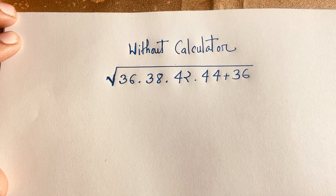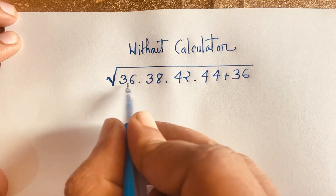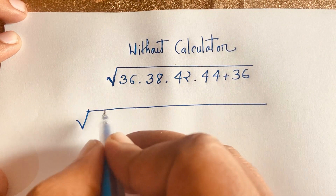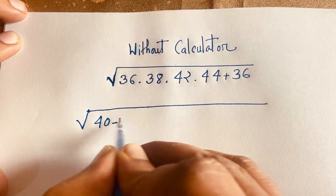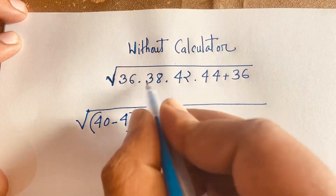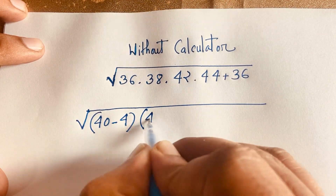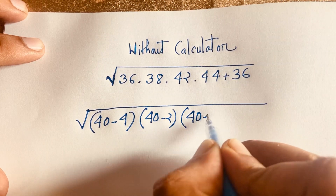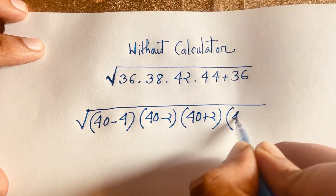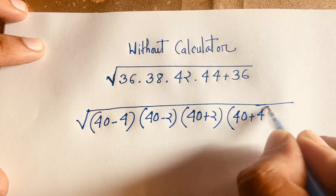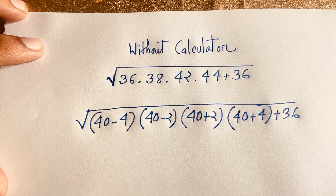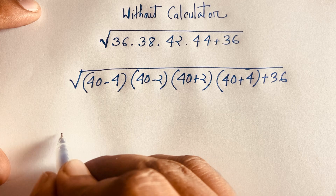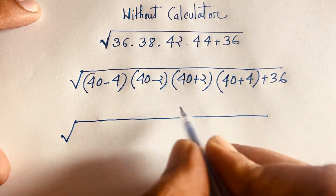Our expression starts with 36, which I can write as 40 minus 4. Then 38 is 40 minus 2, and 42 is 40 plus 2, and 44 is 40 plus 4. We also have plus 36 inside the square root. I will solve this question without a calculator.